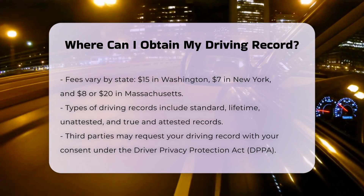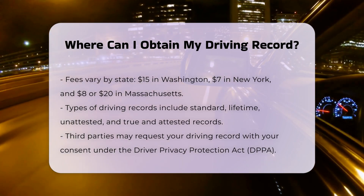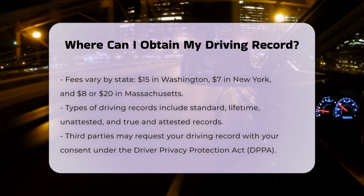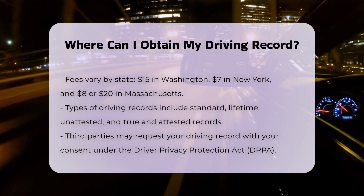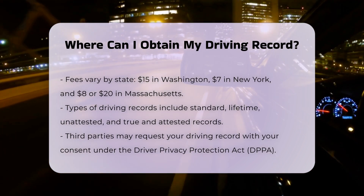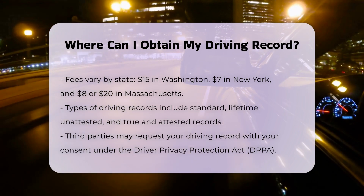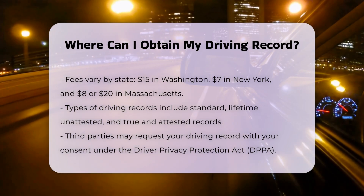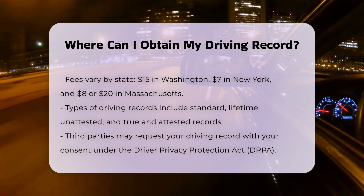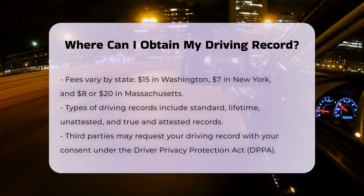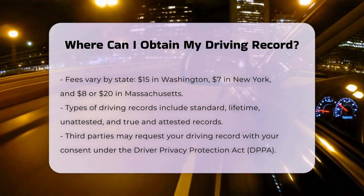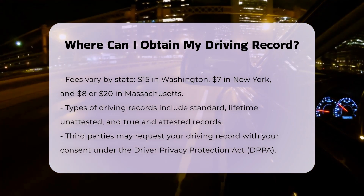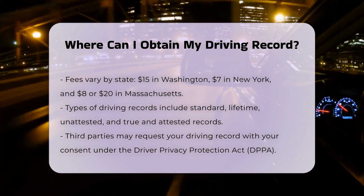Types of driving records: different types of driving records are available. Standard contains recent information, such as the past few years of your driving history. Lifetime includes all available information from the DMV, regardless of data retention requirements. Unattested and true and attested — in Massachusetts, an unattested record is for personal use and costs $8, while a true and attested record used for official purposes costs $20.